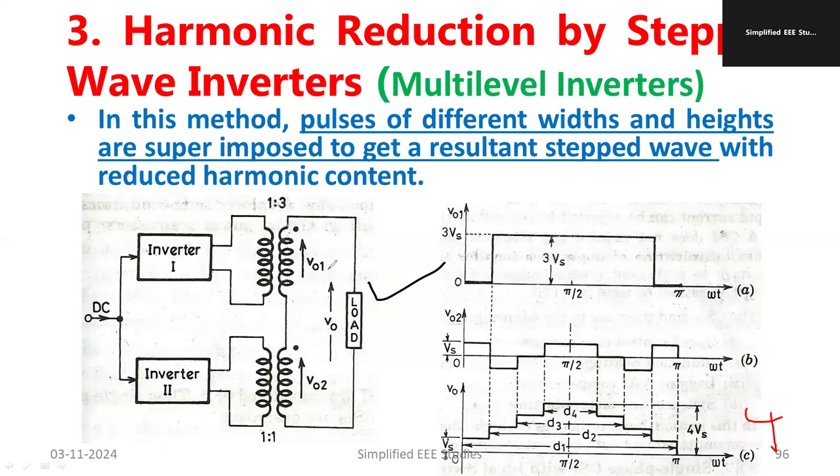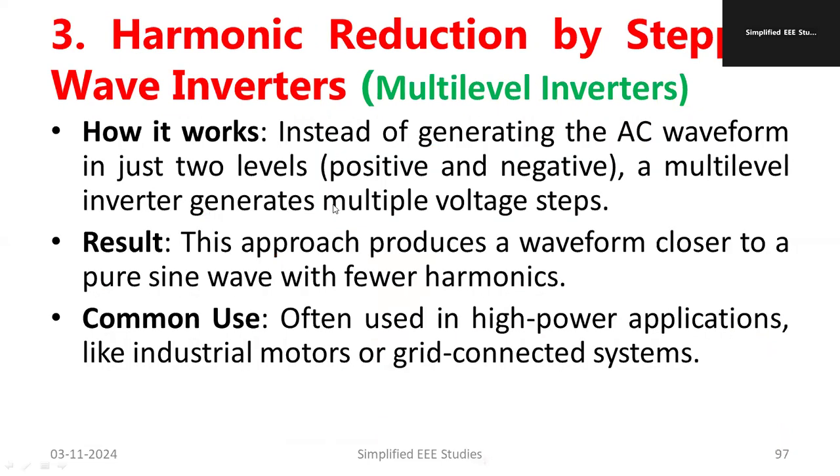In this fashion we have the output voltage. v0 is the sum of v01 and v02. Here you can see the pulses will be having different height and different width. So height will be 4 Vs, the width is equal to d4 then d3 d2 d1 like this. The advantage I would like to inform you that the main advantage is most of the harmonic component is getting cancelled. Only lower order, high value harmonics will be pertained. So that doesn't matter that we can mitigate. Instead of generating AC waveforms in just two levels positive and negative level multi-level inverter generate multiple voltage steps. The main particularities which will produce the waveform closer to the sinusoidal waveform with very few harmonics. Higher order harmonic or more severe harmonics such as third and fifth order will be mitigated. Common usages are high power applications like VFD etc.